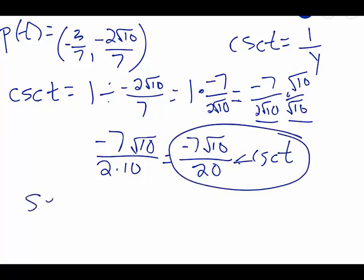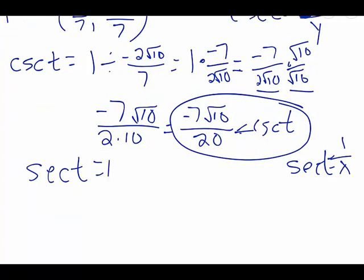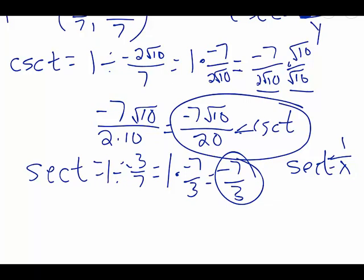Let's work on finding what secant of t is. Secant of t is actually equal to 1 over x. So 1 divided by x would just look like 1 divided by our x value, which is negative 3 sevenths. Again, keep, change, flip. Keep the first, change the symbol, flip the second one. 1 times negative 7 thirds is just negative 7 thirds for secant of t.